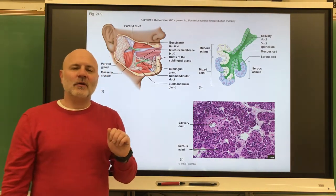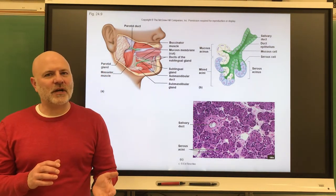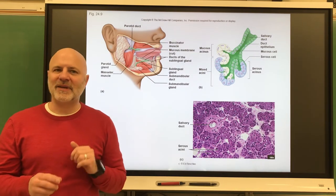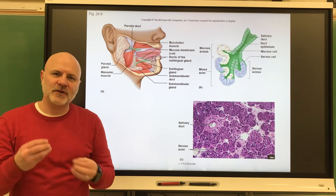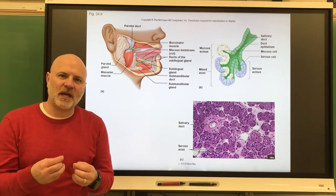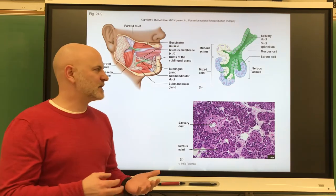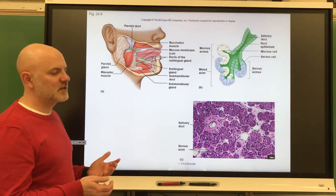Now look at the functions of saliva. The functions there are to clean the mouth. They are also going to dissolve the food particles so they can be tasted because these are chemoreceptors. The chemicals to be sensed have to be dissolved in a solution. It also moistens the food and that's what creates the bolus there.